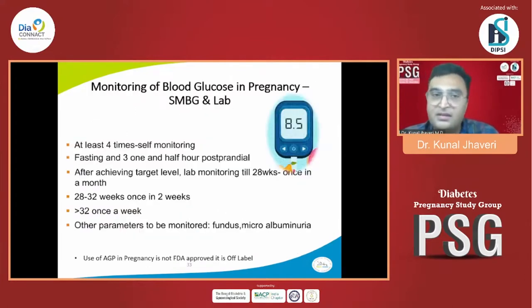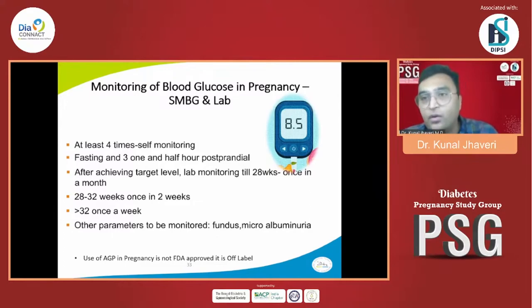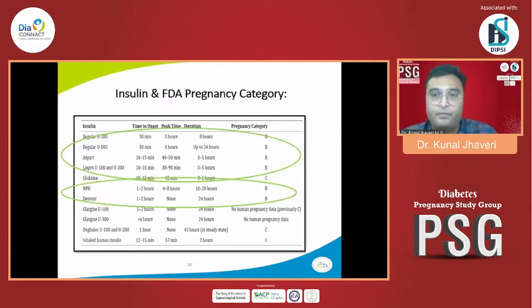For monitoring blood glucose: at least four times per day SMBG is required — fasting and three postprandial readings. After achieving target, lab investigations can be done: once a month up to 28 weeks, twice a week from 28 to 32 weeks, and weekly beyond 32 weeks. Other parameters also need to be monitored.